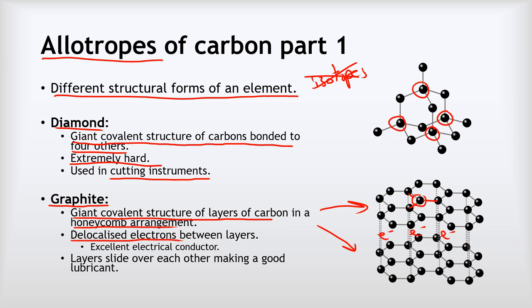Delocalized means that they are free to move, so that means that if I was to put a positive there and a negative over here and apply a potential difference, the electrons can move that direction, which means that graphite is an excellent electrical conductor, which is unusual for a giant covalent substance.